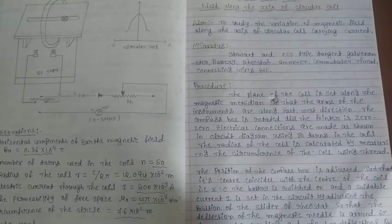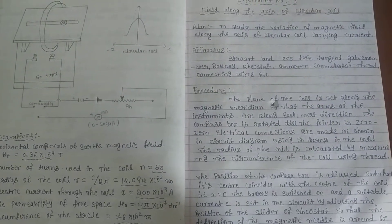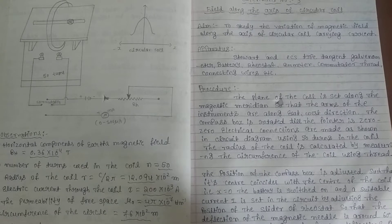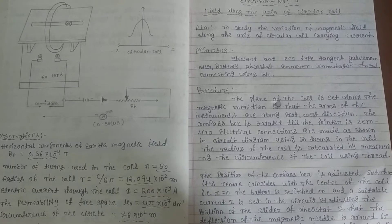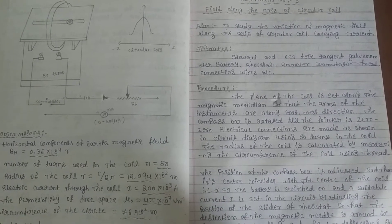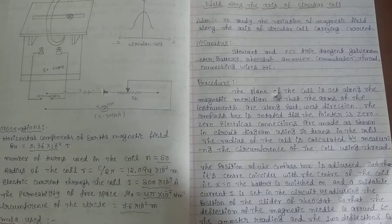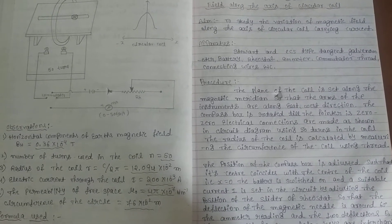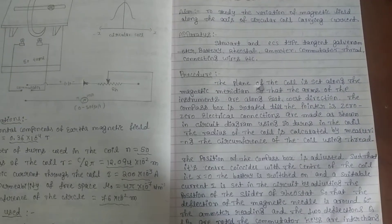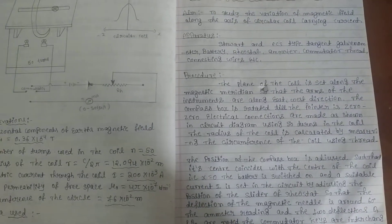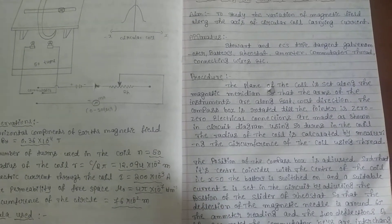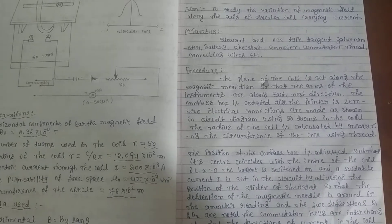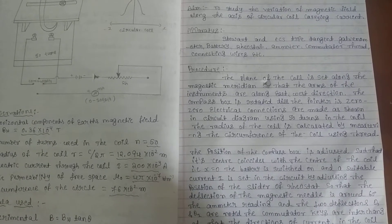The aim of the experiment is to study the variation of magnetic field along the axis of a circular coil carrying current. The apparatus needed includes the tangent galvanometer, a battery, a rheostat, ammeter, commutator key, and so on.